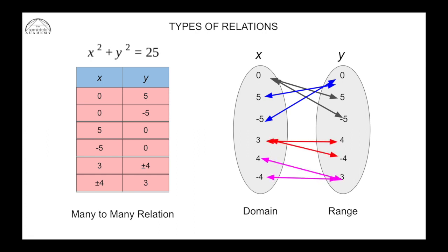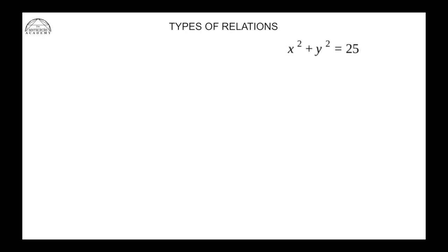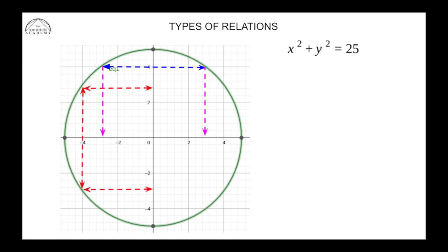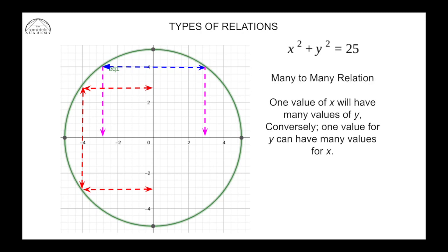We can see the many-to-many relation on a graph. The equation x² + y² = 25 is a perfect circle. One value of y gives two different values of x, and at the same time one value of x gives two different values of y. So this is a many-to-many relation: one value of x will have many values of y, or conversely one value of y can have many values of x.